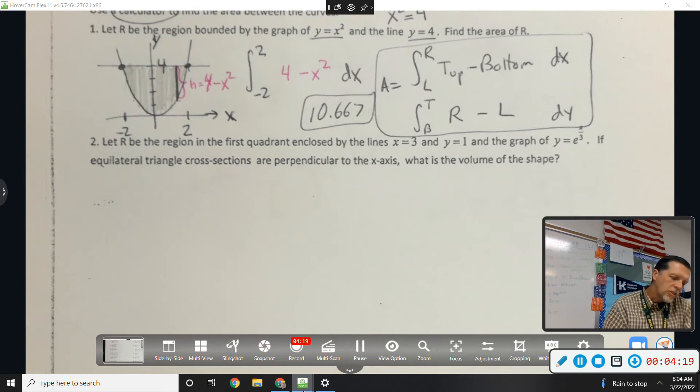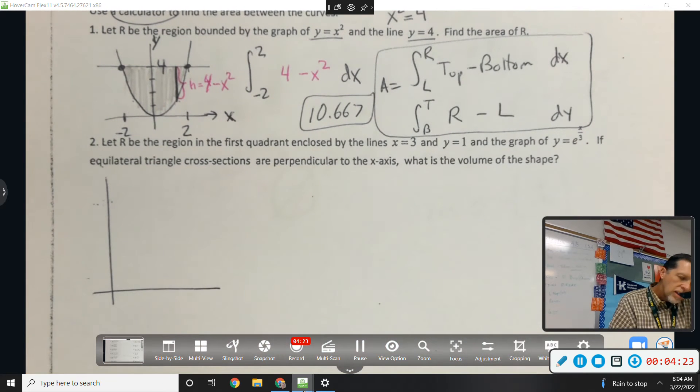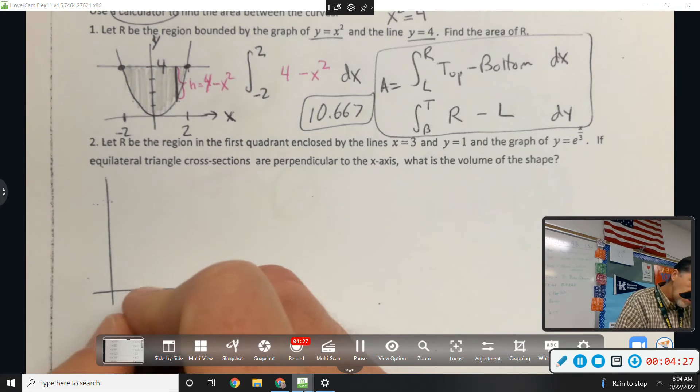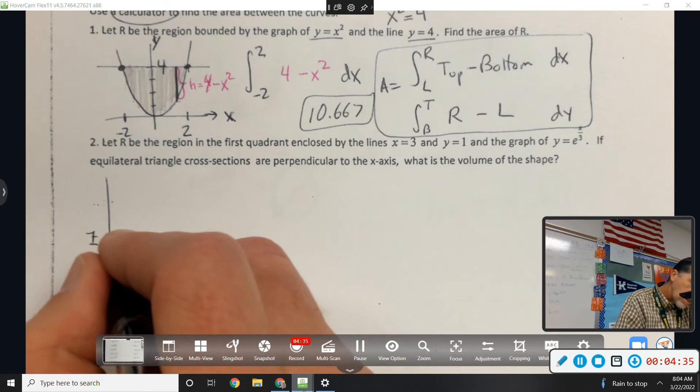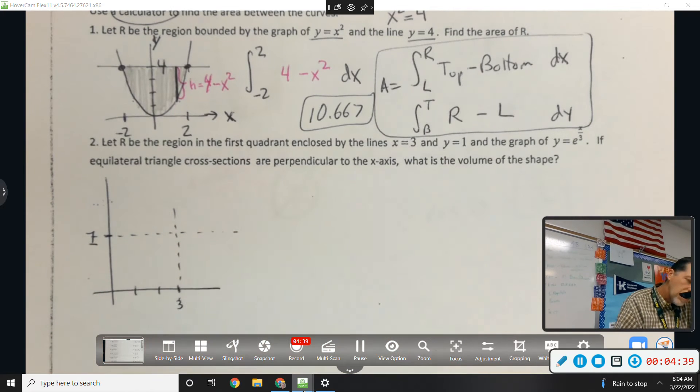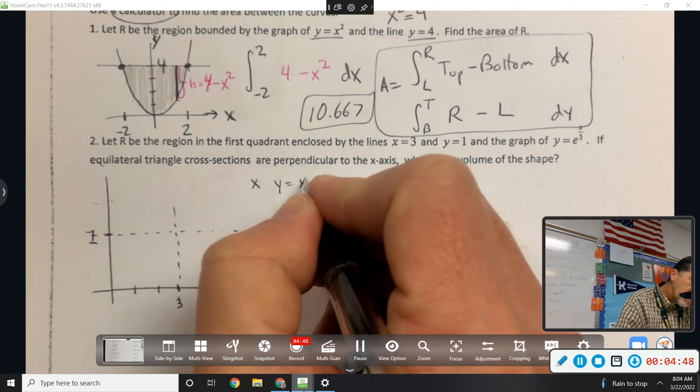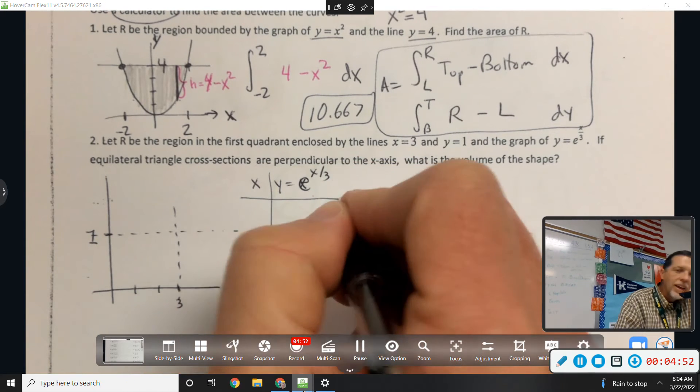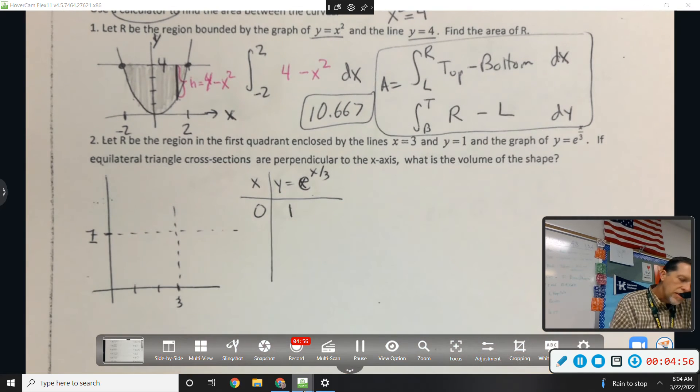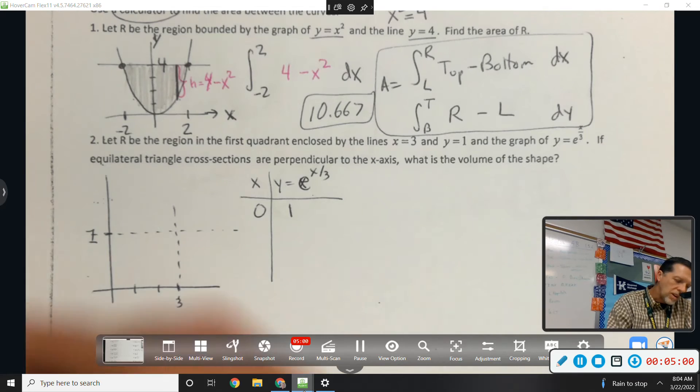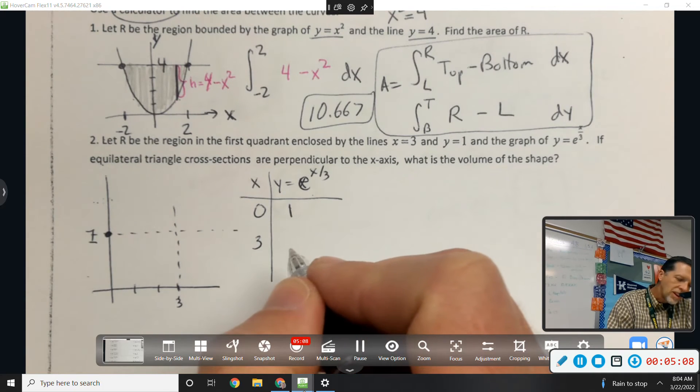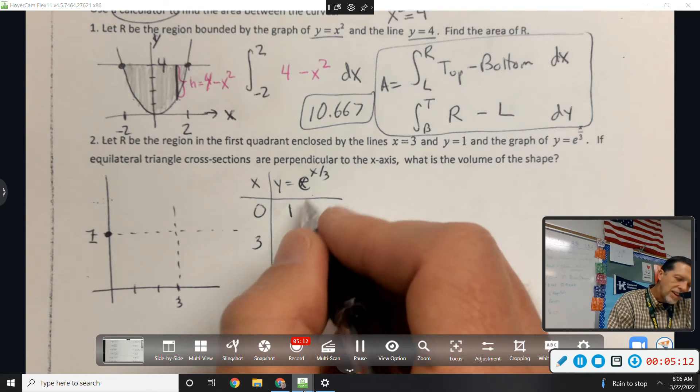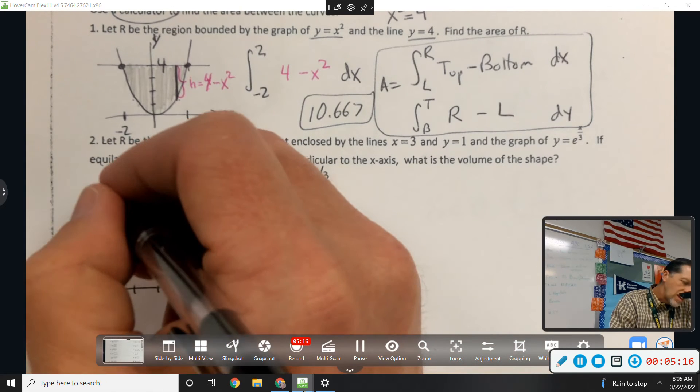Number two. Let R be the region in the first quadrant enclosed by the lines x equals 3, y equals 1, and y equals e to the x over 3. Well, I don't really know what e to the x over 3 looks like. So I guess I have a calculator. If I put in 0, e to the 0 is 1. If I put in 3, I get e to the 1st, which is e.